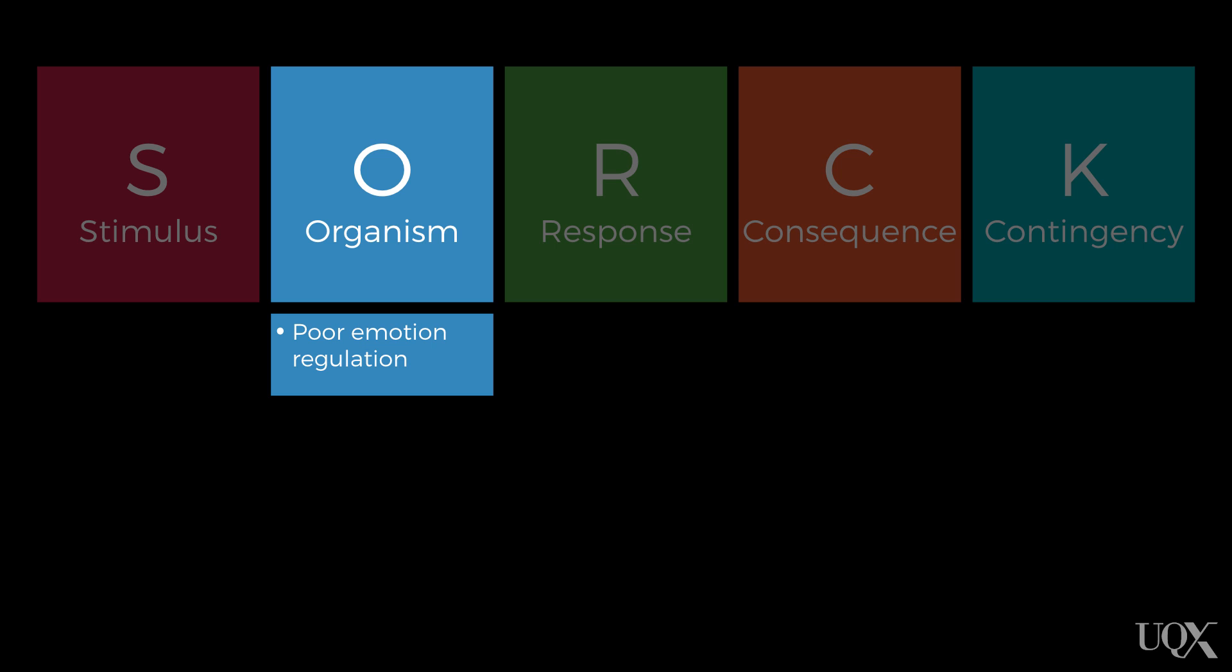Organismic variables may include cognitive functioning, drug use, emotions, and physical health problems. For Jamie, the only thing that is relevant here is that he struggles with regulating or managing his emotions.